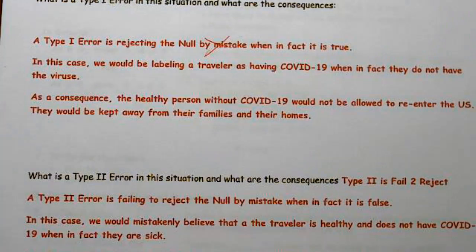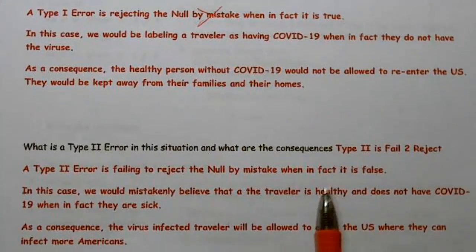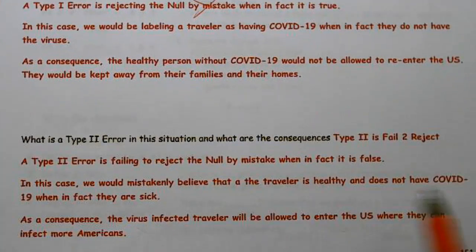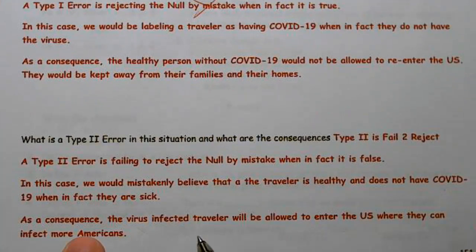When a Type 2 error occurs in this situation, what are the consequences? Well, Type 2 is failing to reject. A Type 2 error is failing to reject the null by mistake when in fact it's false. In this case, we would believe the traveler is healthy and does not have COVID-19 when in fact they have the virus. As a consequence, the virus-infected traveler will be allowed to enter the U.S., where they can infect more Americans.